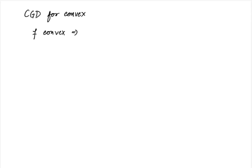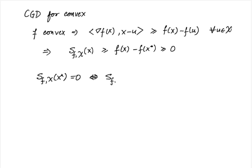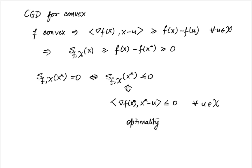For convex functions, the first-order convexity condition gives <gradient f(x), x - u> >= f(x) - f(u) for all u in X. Maximizing both sides over u in X gives S(x) >= f(x) - f(x*) >= 0. So for convex functions, the conditional gradient divergence is an upper bound on the optimality gap. Furthermore, S(x*) = 0 is equivalent to <gradient f(x*), x* - u> <= 0 for all u in X, which is exactly the optimality condition. In summary, the conditional gradient divergence is non-negative and equals zero only when x is the optimal x*.